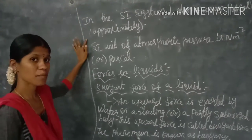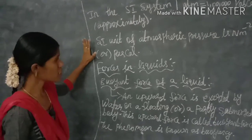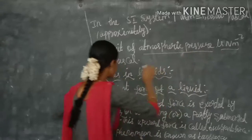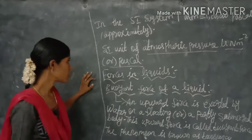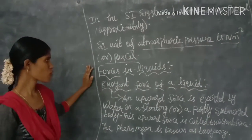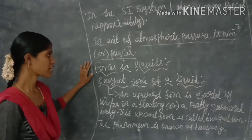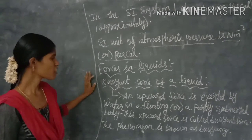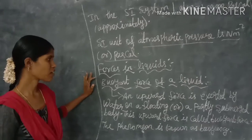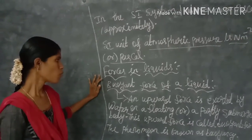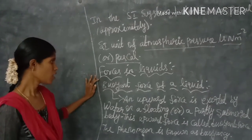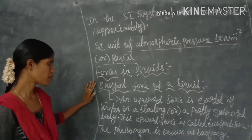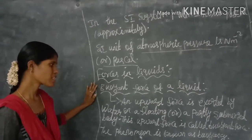The SI unit of atmospheric pressure is newton per meter squared, or pascal. Next, we look at forces in liquids. The buoyant force is an upward force exerted by water on a floating surface or body.